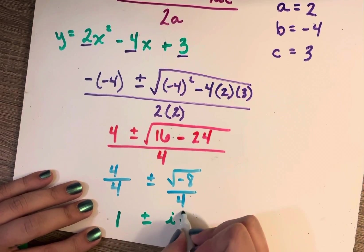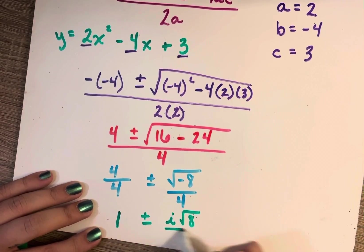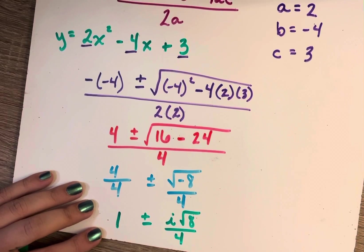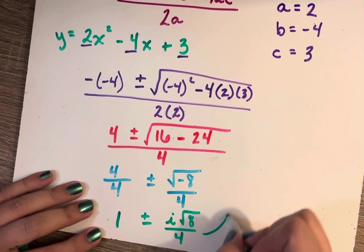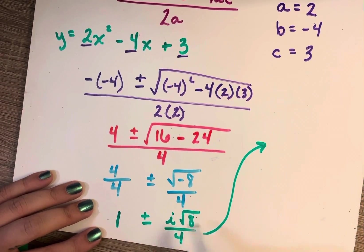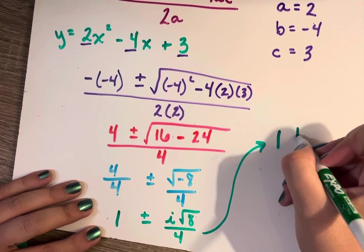So I have i radical 8 over 4, because the square root of negative 1 is i. It's imaginary. Let's move this over here to complete this. So 1 plus or minus.